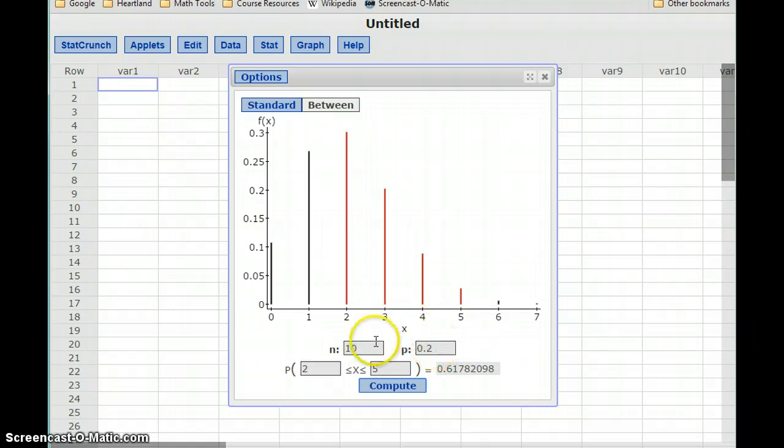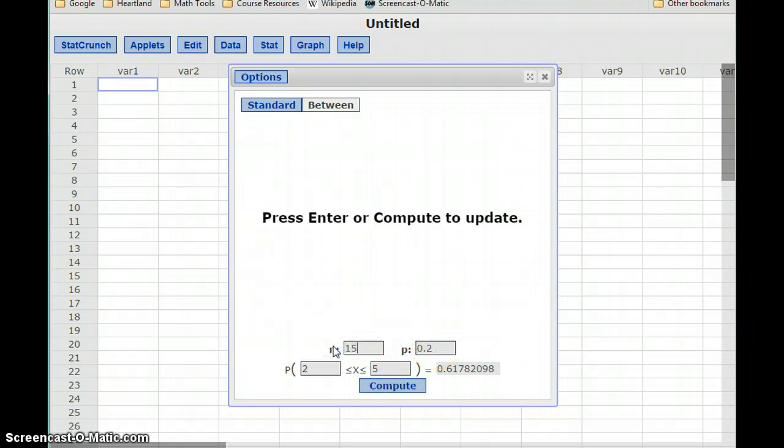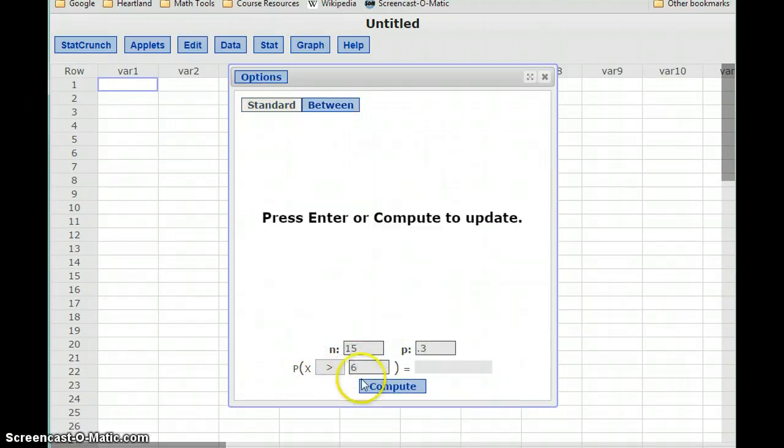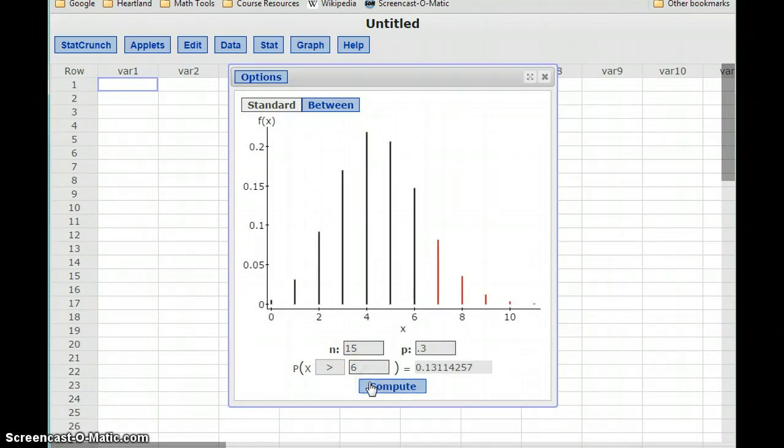In example four, our number of trials is 15. Our probability of success is 0.3. And we want to switch back to standard to calculate the probability that X is greater than 6. So if these 15 prisoners are released, the probability that more than 6 of them will return to prison is a little over 13 percent.